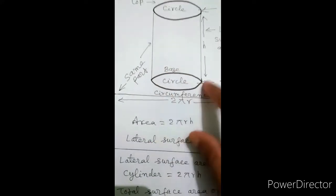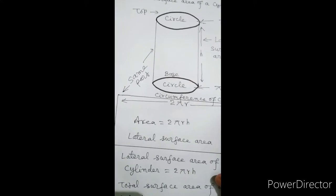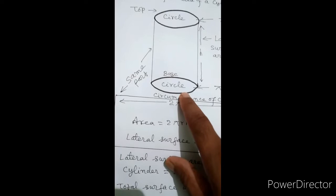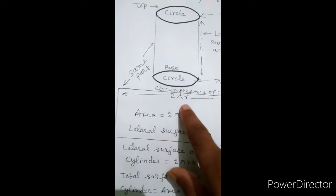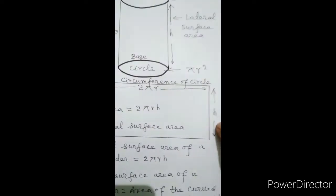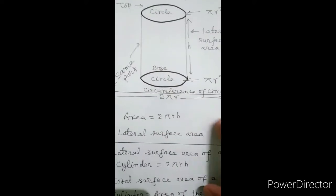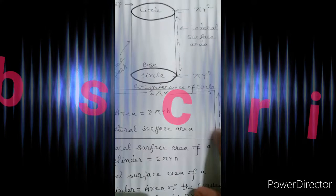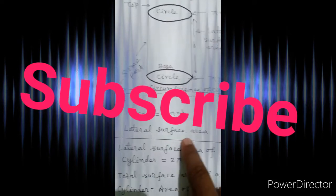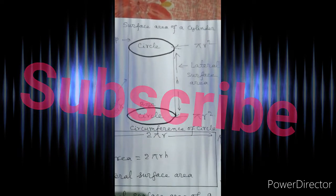The circumference of the circular base becomes the length of the rectangle. As we know, circumference of a circle is 2πr, so the length of this rectangle is 2πr, and h remains unchanged — this part is h. So the area of this rectangular part will be L into B, that is 2πr into h. So, the area of the lateral surface of a cylinder is 2πrh.